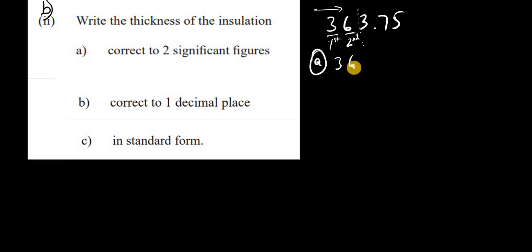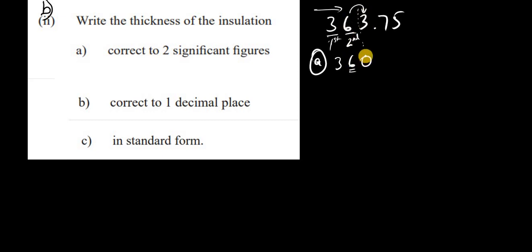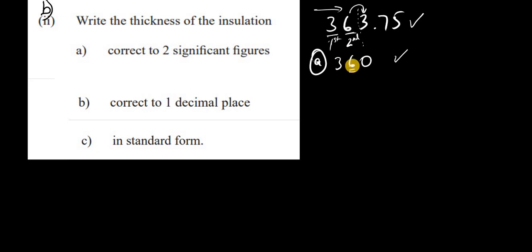Since the 6 is in the tens place, when we chop off the other digits we must maintain its place value, giving us 360. We don't round up the 6, because the next digit — the first one being chopped off — is 3, which is less than 5. We add a zero to maintain the place value of the 6, which is in the tens place. So 360 is approximately equal to 363.75.